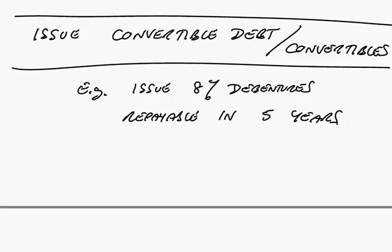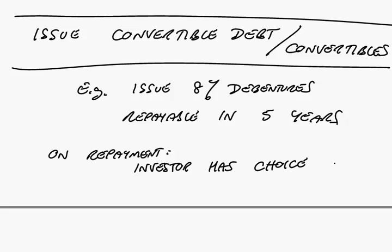But with convertibles, when it comes time for repayment — so in five years' time — the investor has the choice. The investor is given the choice of taking cash or a fixed number of shares in the company on repayment.